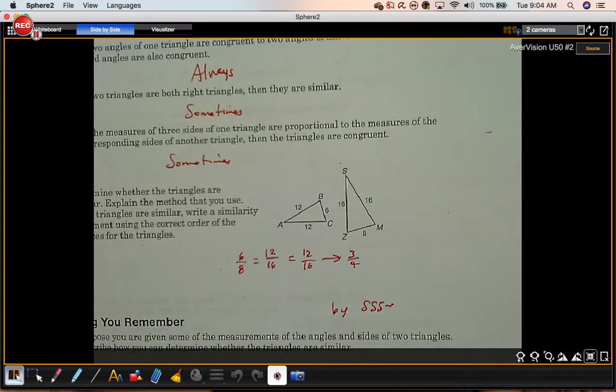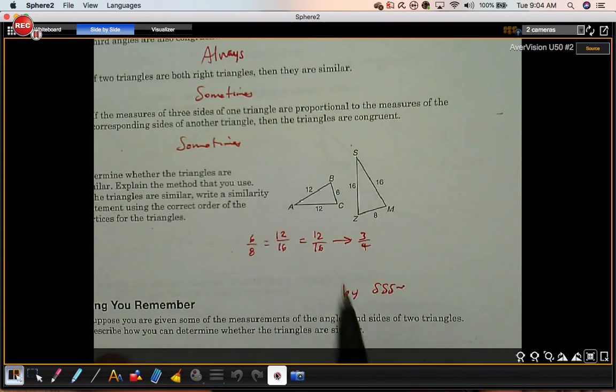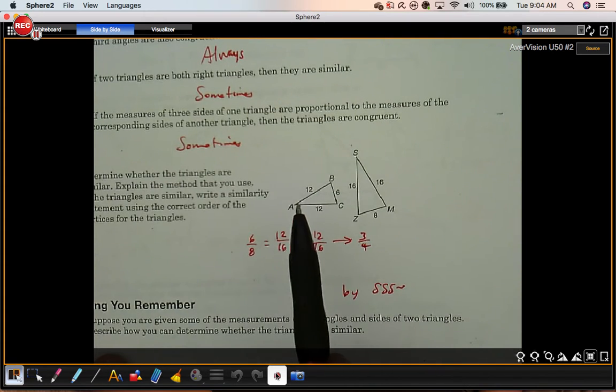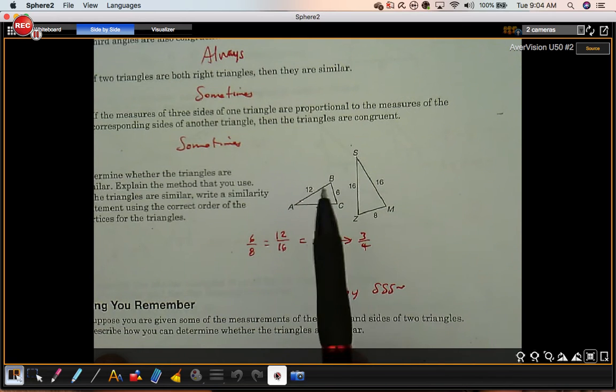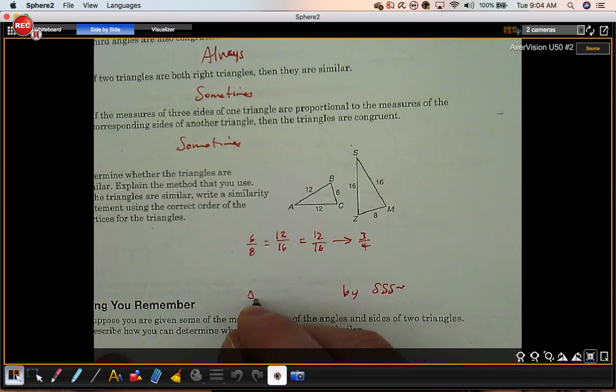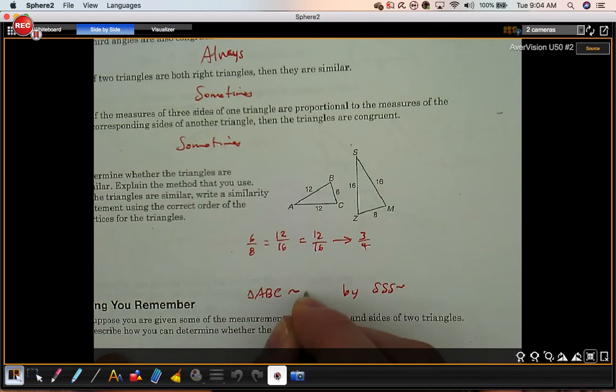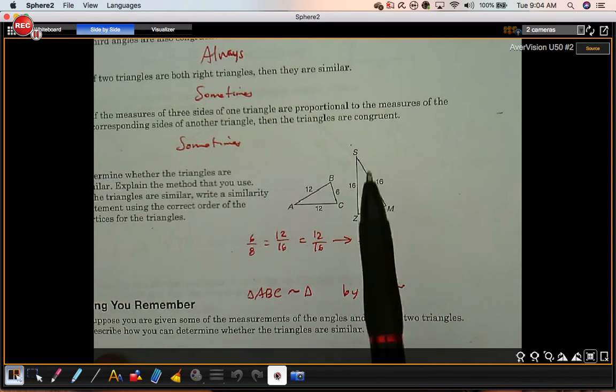By side-side-side. You need to name the triangles now. I'll call this, I'll start at the vertex angle, since this is an isosceles triangle, ABC. And it's similar to this triangle. I'll start at the vertex angle.